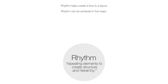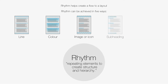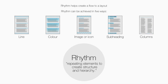Rhythm is achieved by repeating elements in a subtle way. These can include line, colour, a small image or icon, subheading or a bold line, columns of body text.